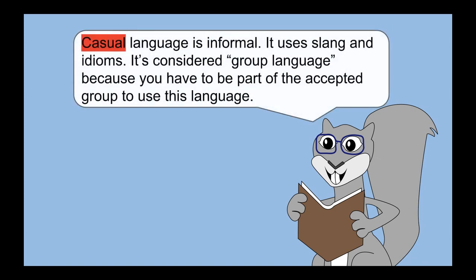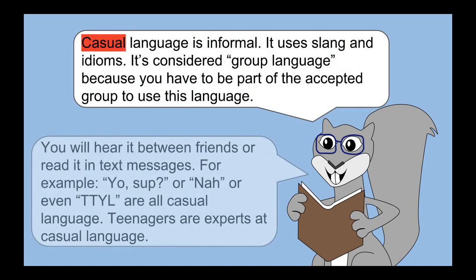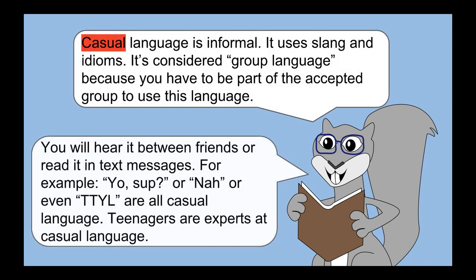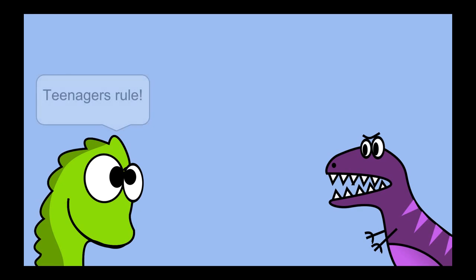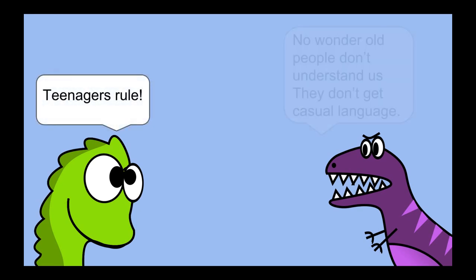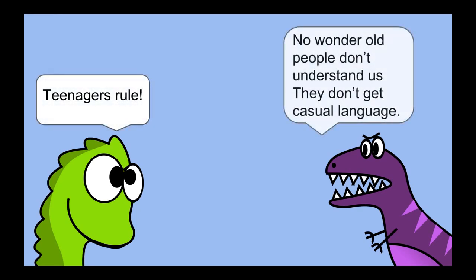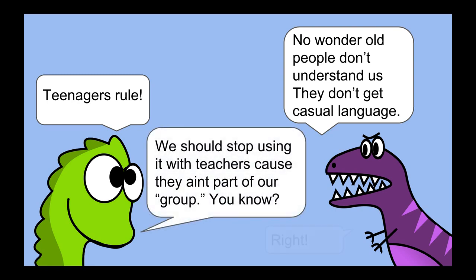Casual language is informal. It uses slang and idioms. It's considered group language because you have to be part of the accepted group to use it. You will hear it between friends or read it in text messages. For example, yo, sup, nah, or even TTYL are all casual language. Teenagers are experts at casual language. No wonder old people don't understand us — they don't get casual language. You should stop using it with teachers because they ain't part of our group.